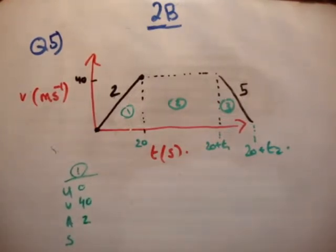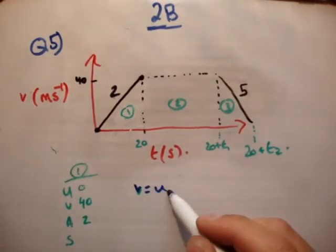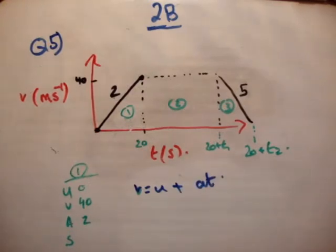So let's get the time. If we use V equals U plus AT, the only unknown is T and that'll work. Remember, for every unknown you have, you must have a single equation that'll allow you to get it. If you have two unknowns, you need two equations. Otherwise you can't do it.